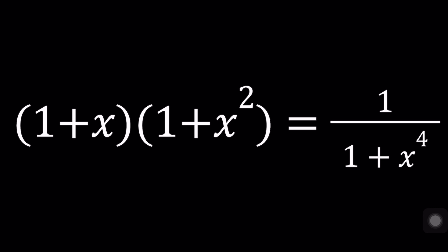So we have this equation, 1 plus x, 1 plus x squared, and I have 1 over 1 plus x to the fourth power. What do you think I'm going to do first? If you said cross multiply, you got it. Let's multiply both sides by 1 plus x to the fourth power. That's going to give us 1 plus x times 1 plus x squared times 1 plus x to the fourth power equals 1.